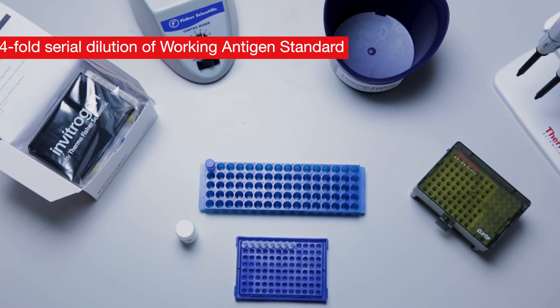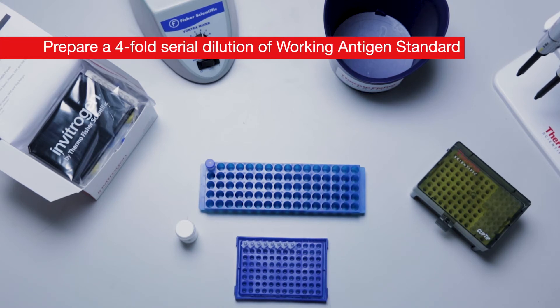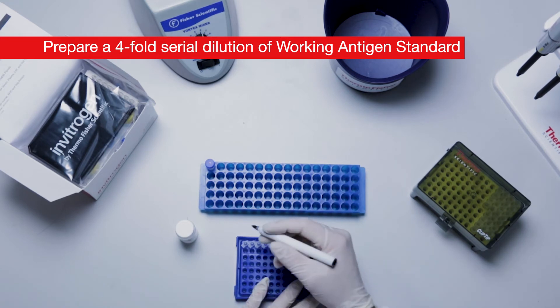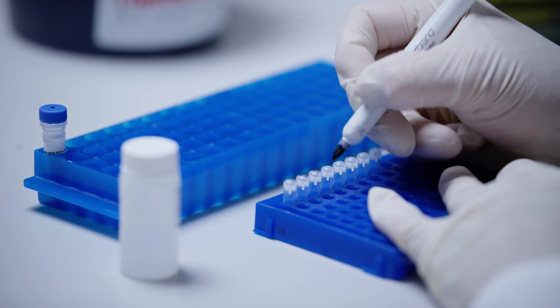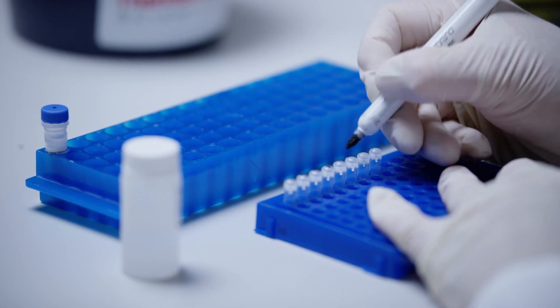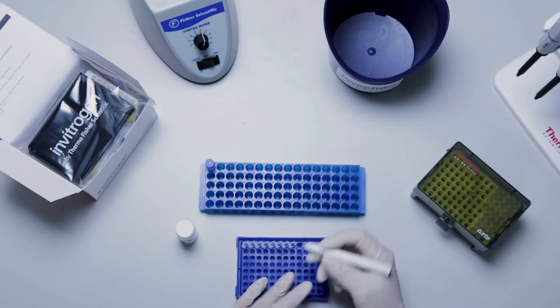Prepare a four-fold serial dilution of the working antigen standard vial using the eight-tube strip provided. Label tubes sequentially standard 1 through standard 7. Label the eighth tube for use as a background.